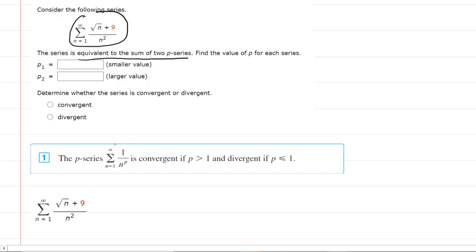A p-series takes on this form where you have 1 over n raised to some power. Our first step is to take our series and rewrite it as the sum of 2 p-series.